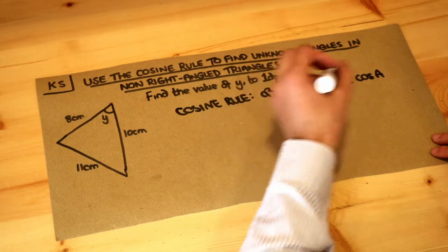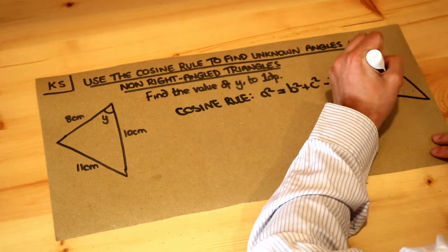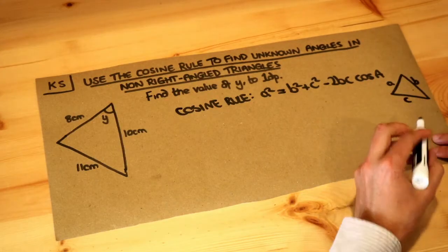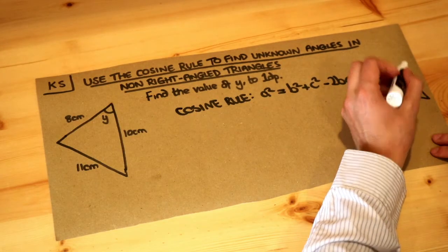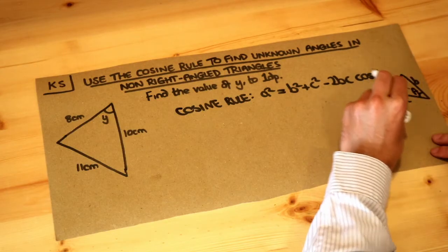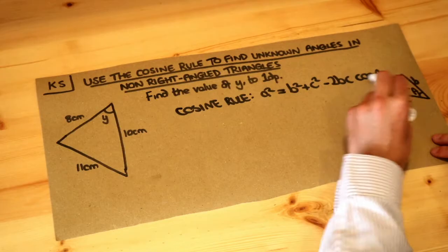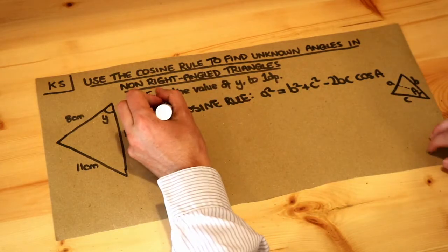And we would use that on a triangle like this. So if we had a triangle with the three sides of A, B and C, and the angle opposite that side A is capital A, noticing that the capital A is the only capital letter in this formula, it's the only angle involved, then that is the cosine rule.